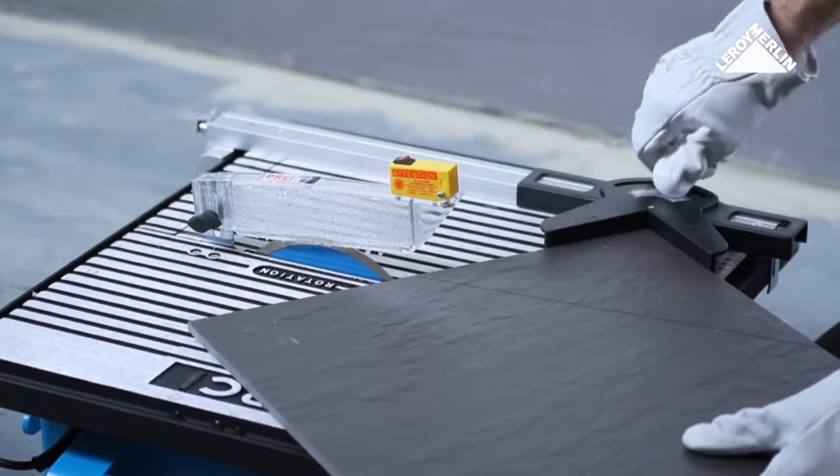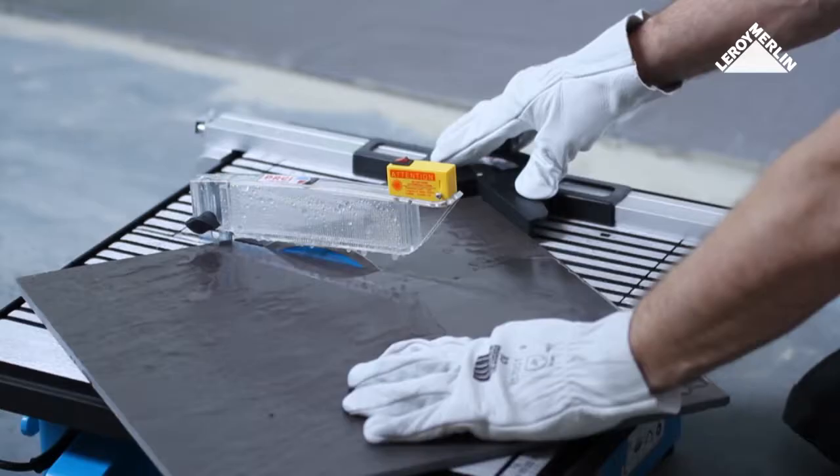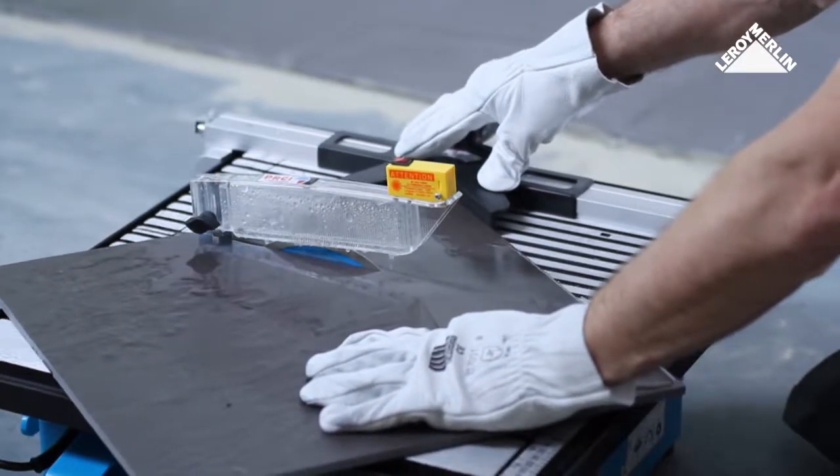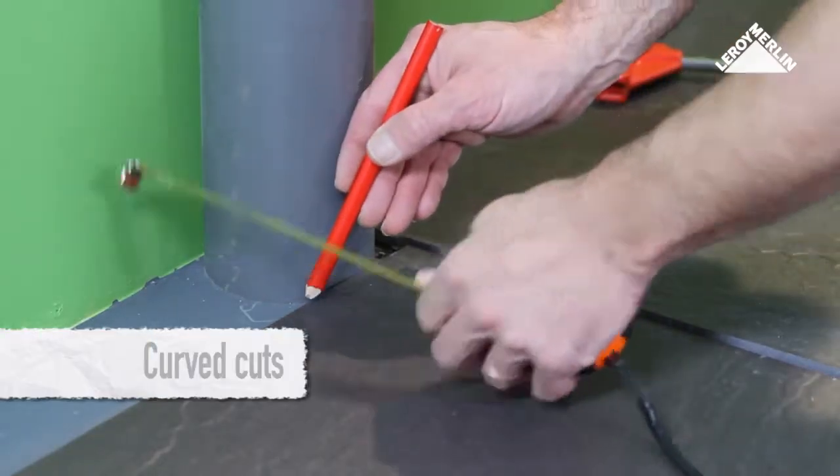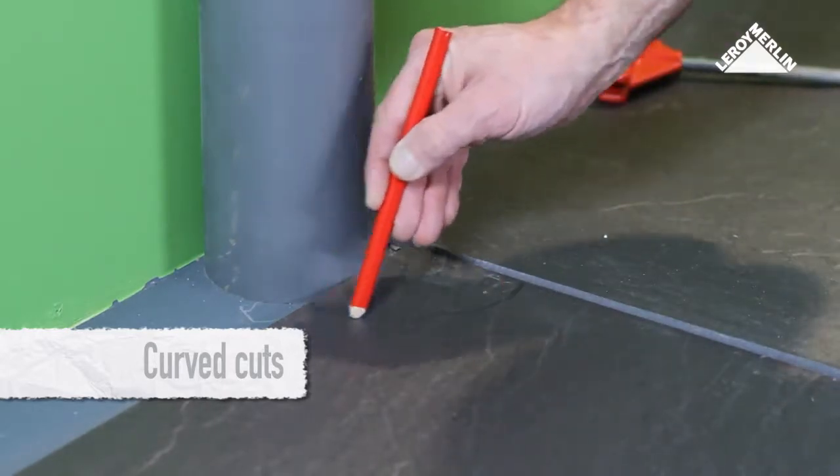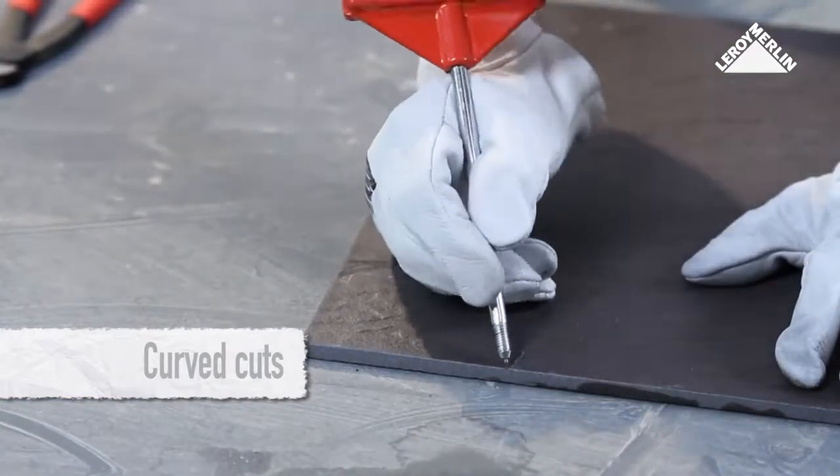The electric tile cutter makes straight cuts but can also make angle cuts. In the middle of the tile, mark the cut with a soft pencil and mark out the area to be removed using the tile marker.